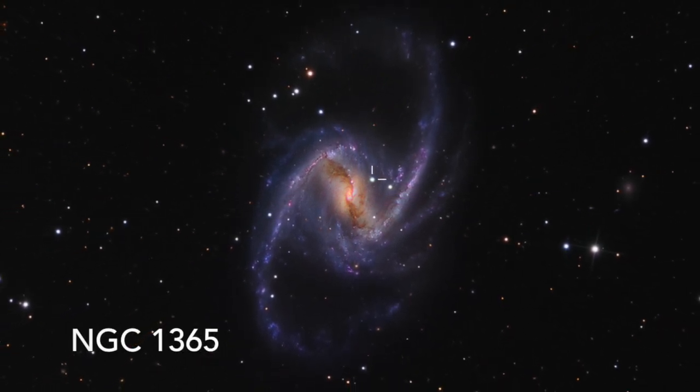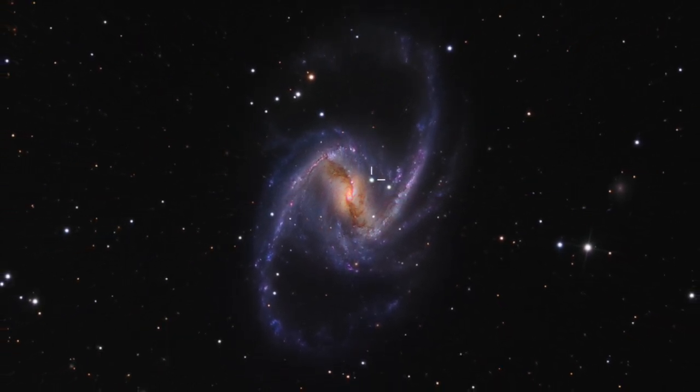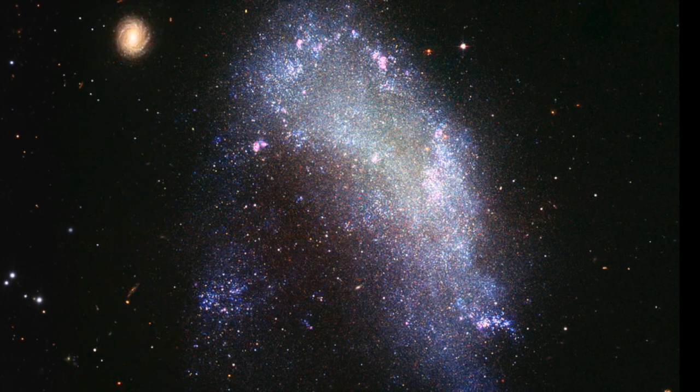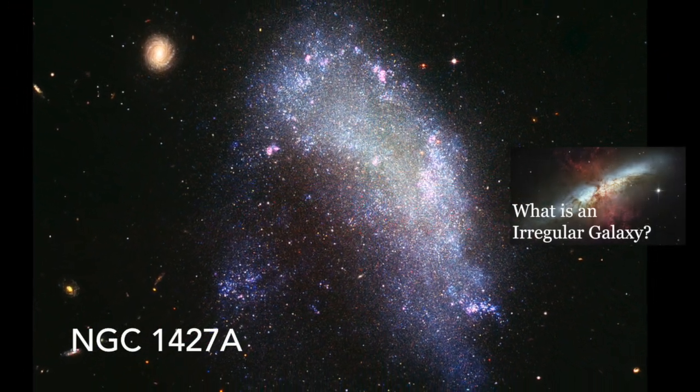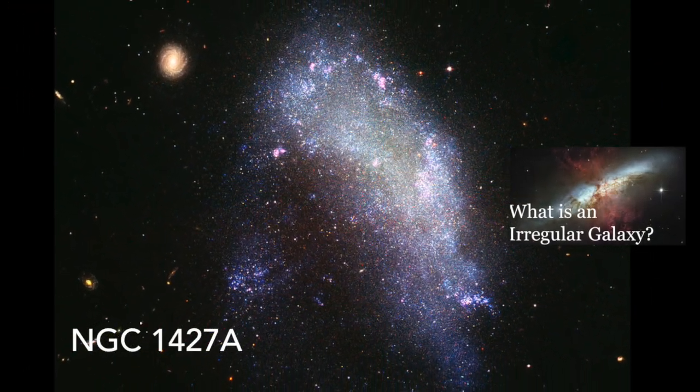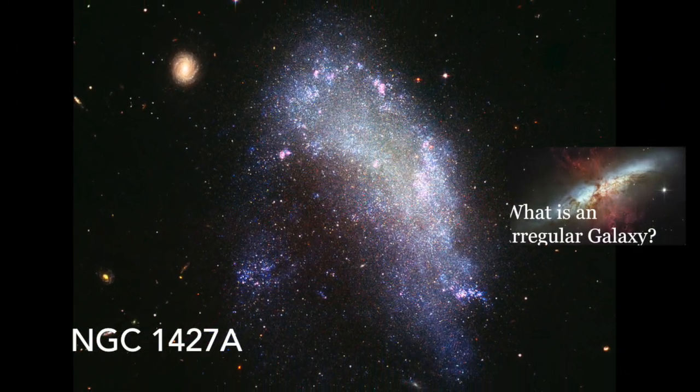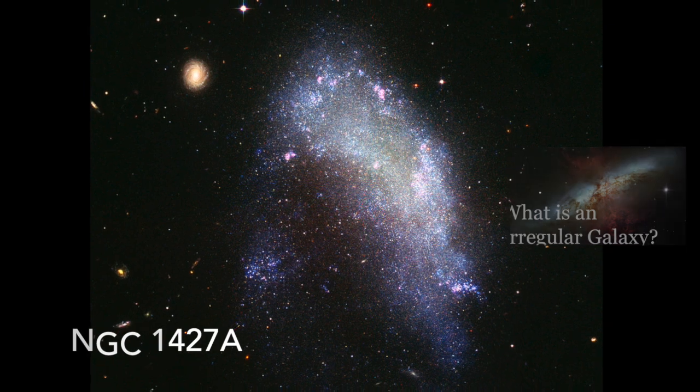A fourth type of galaxy are those with an irregular shape, falling under no ordinary class in the Hubble Sequence due to their complete lack of structure.